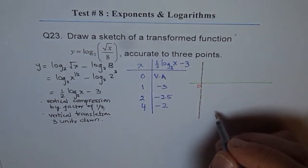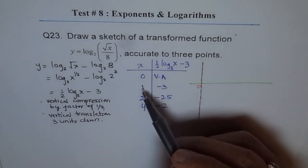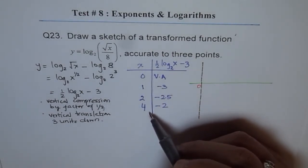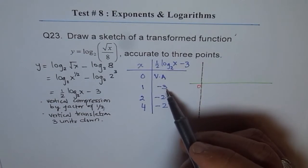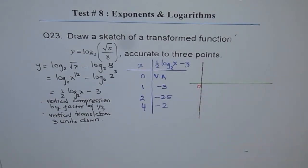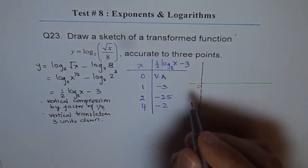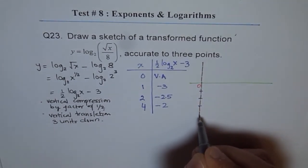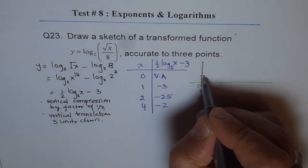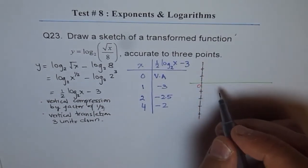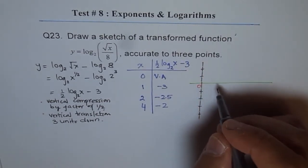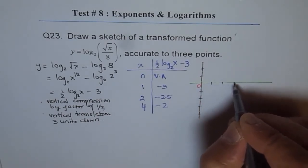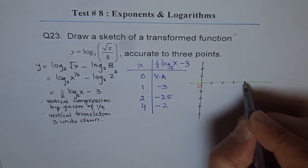And then, the different points which we have taken is 1, 2, and 4. And at these points, the y-values are minus 3, minus 2.5, and minus 2. So let's take this as 1 unit, 2 unit, 3 unit, and 4 unit. So let's just have 1 and 2. And on x-axis, let's take this as 1, 2, 3, and 4.